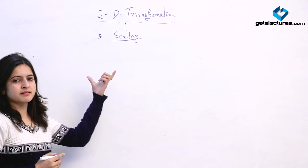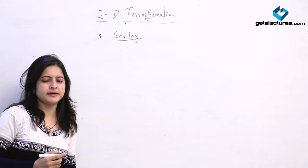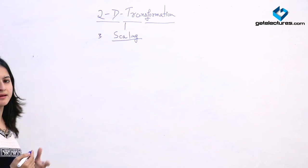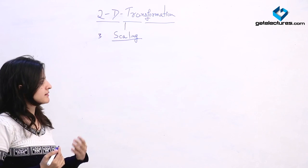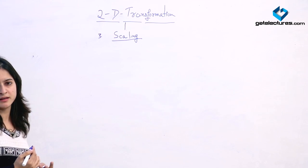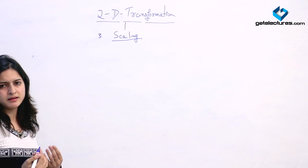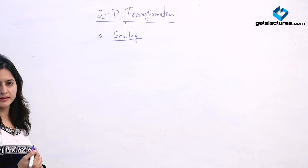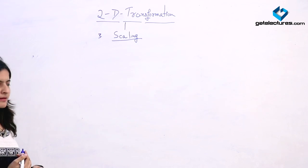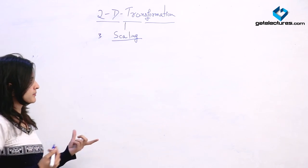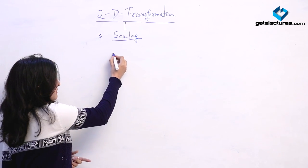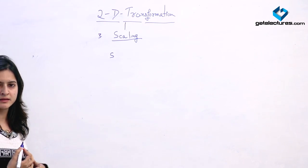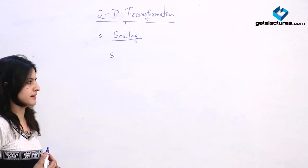Our third transformation is scaling. The scaling transformation is used to change the size of an object. We can increase or decrease the size of an object in computer graphics. For this we use a scaling factor, which is represented by s — meaning by how much factor we are increasing or decreasing the size.